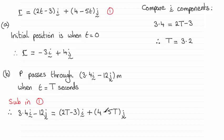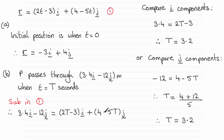And if you compare the j components, that's going to be minus 12 equals 4 minus 5t. And if we do that, you can see the working there. Still leads to T equaling 3.2.